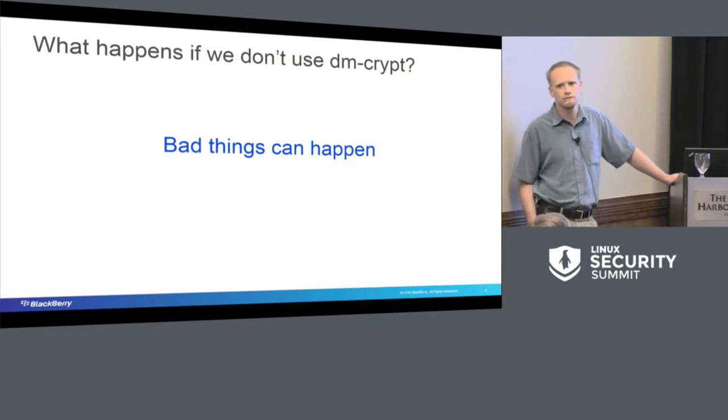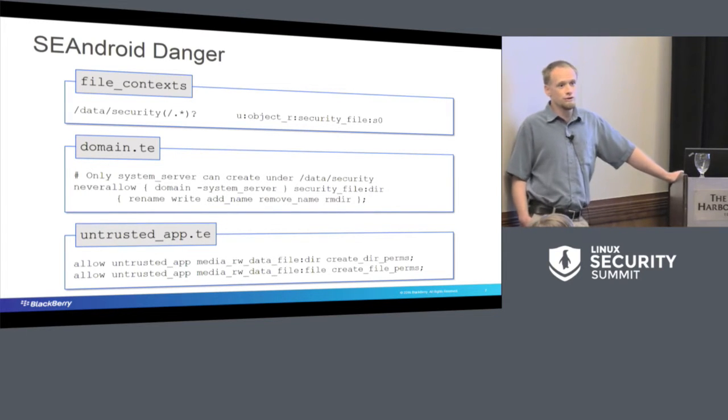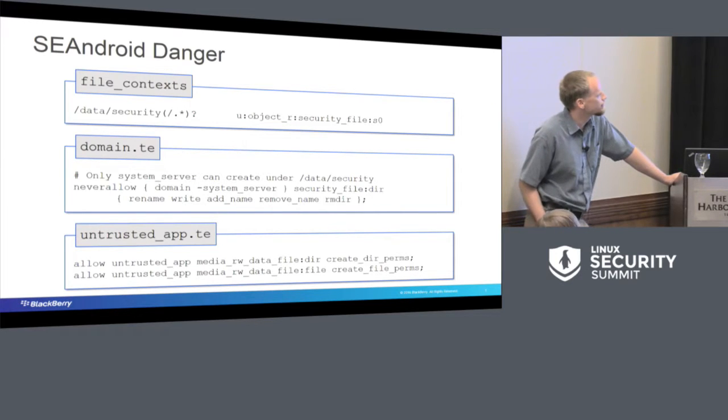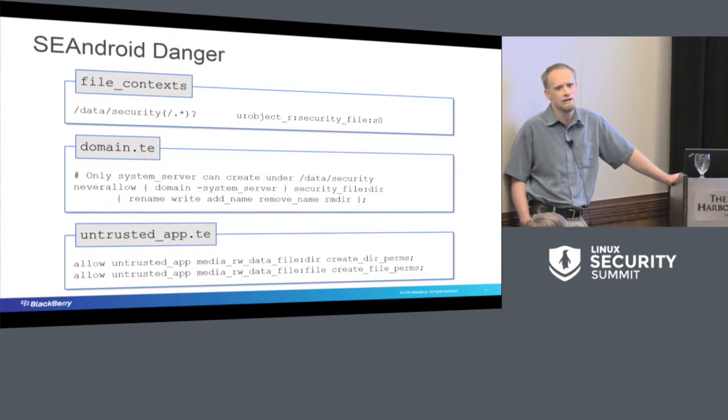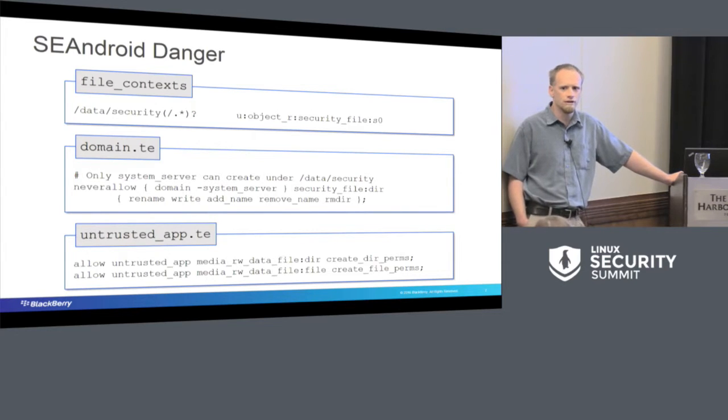So what happens if we don't use DM Crypt? At least in the Android space, let's take a look at some of those SE Linux permissions. Android actually has the ability to store your SE Linux policies on the user data partition as well as storing them on the system partition. They're stored in a directory called /data/security. That directory is labeled with the security file. And if you actually take a look, security file is pretty locked down. There's only a couple of domains on the system that are allowed to access that directory.